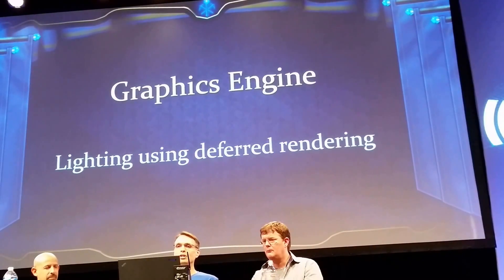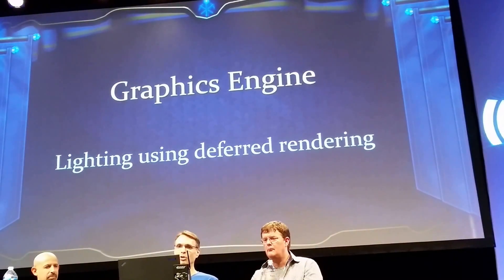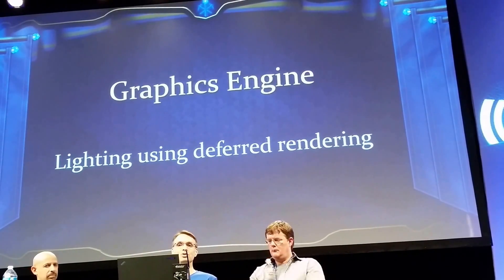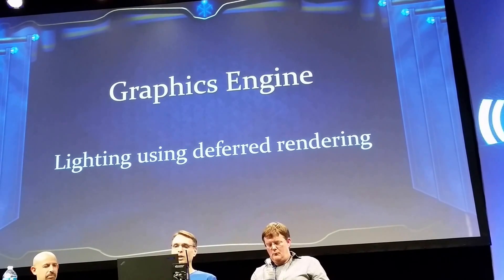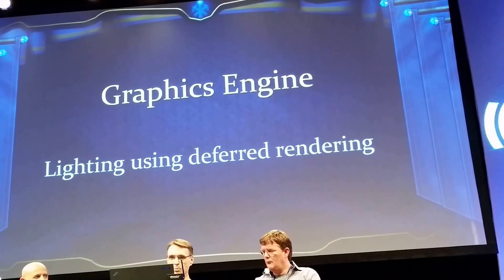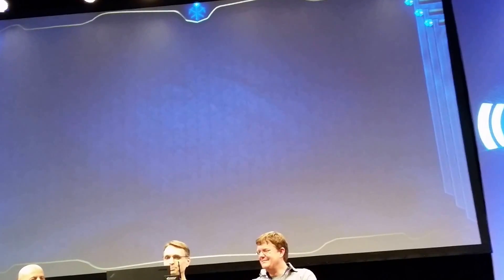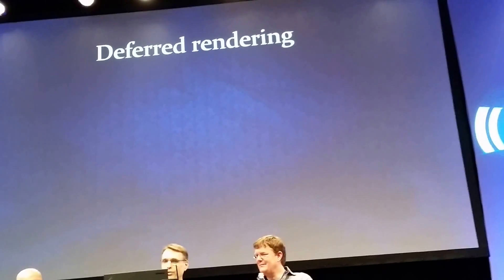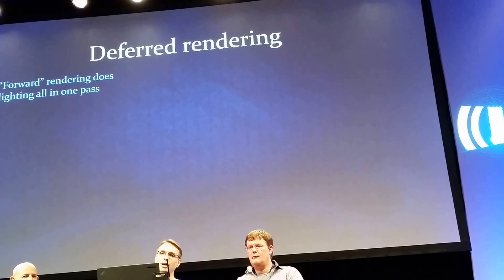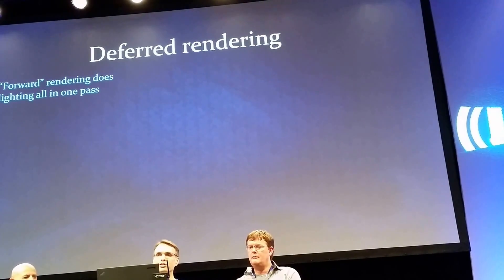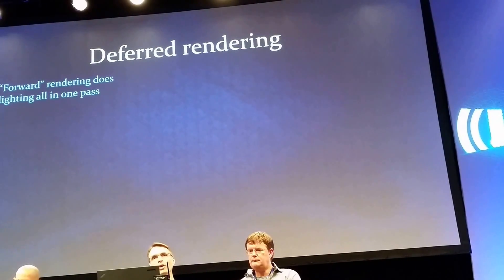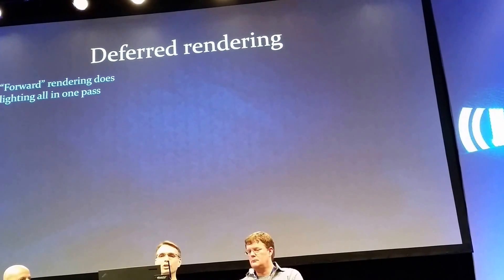The next topic is more generally about our graphics engine. This is the Fortnite engine that we use — a lot of our games at SOE use this engine. It is an engine that uses what's called deferred rendering. The field is split kind of 50-50 between forward renderers and deferred renderers in the industry. All the Unreal games are forward renderers for the most part, but there are a lot of other games that use deferred rendering as well.